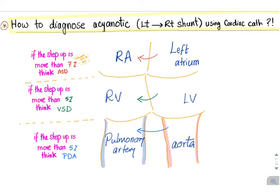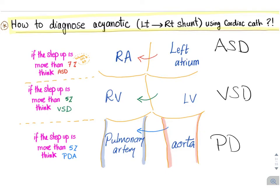How do we diagnose acyanotic or left-to-right shunt conditions using cardiac catheterization? The main acyanotic conditions are ASD (atrial septal defect), VSD (ventricular septal defect), and PDA (patent ductus arteriosus).